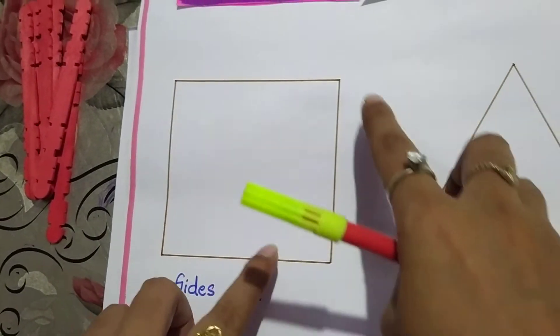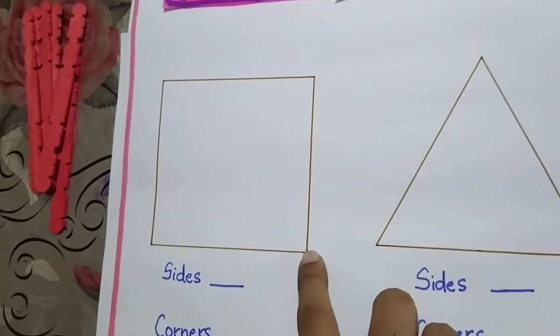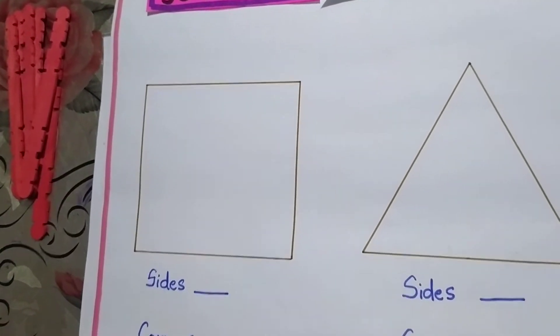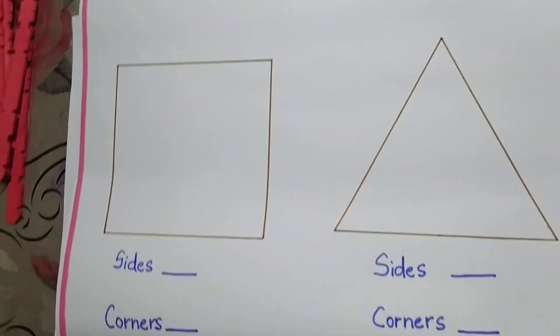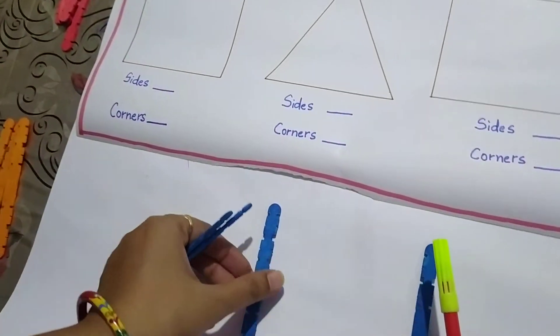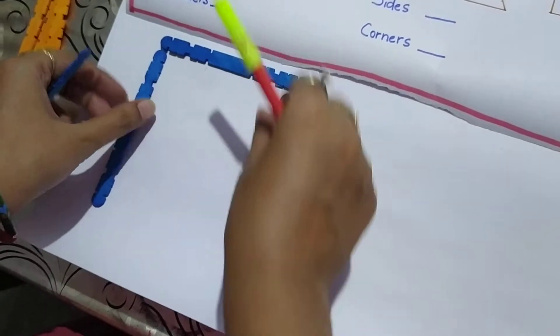And where two straight lines meet, they will make our corner. So let us start with square. Here I will try to make a square with these ice cream sticks. We will join these ice cream sticks to make a square.